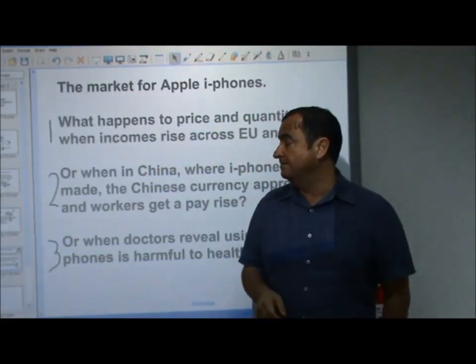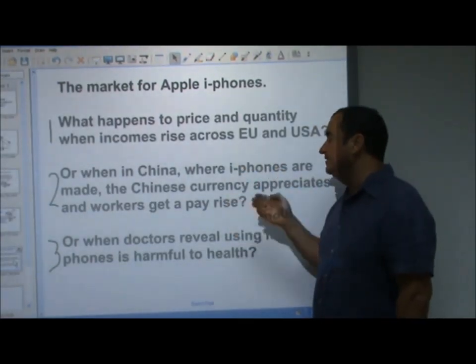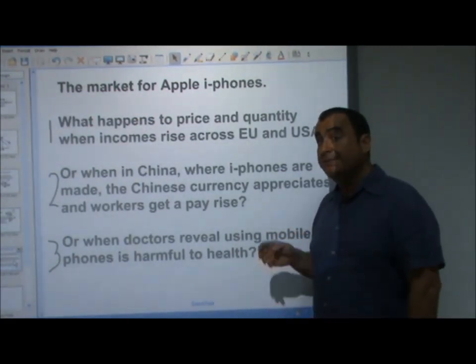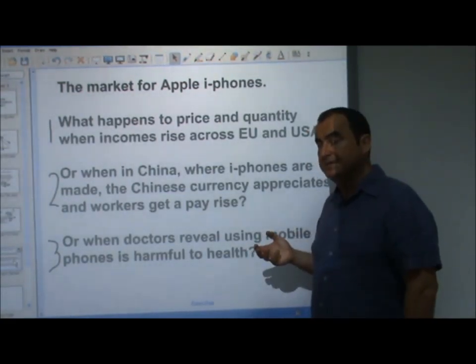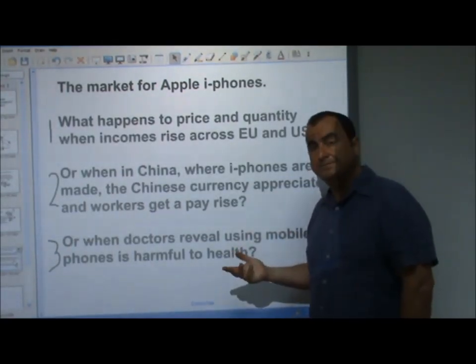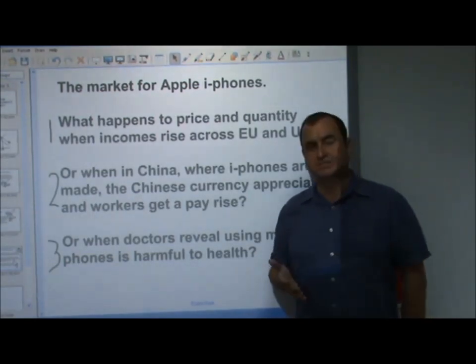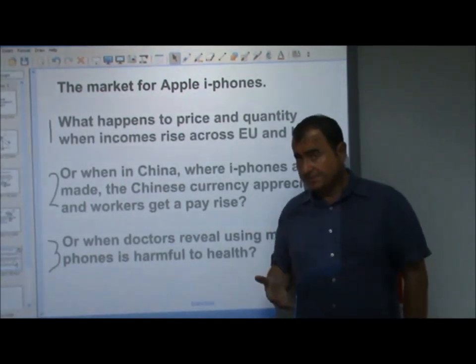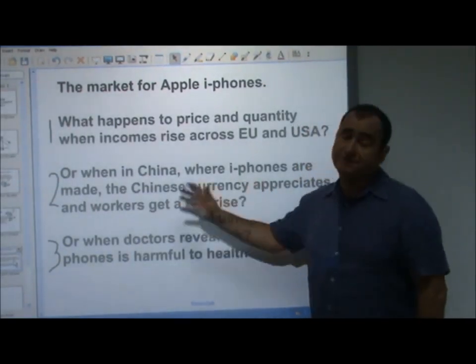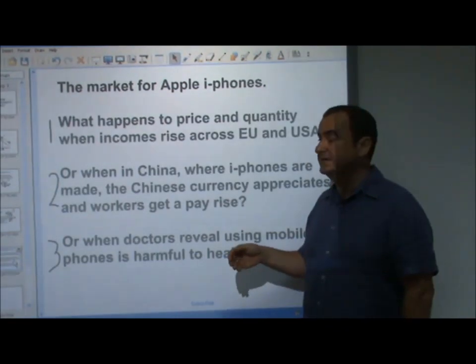Let's look at the second iPhone question. What happens to equilibrium price and quantity when in China, where iPhones are made, the Chinese currency appreciates and workers get a pay rise? It's happening on the supply side. If the currency appreciates, it becomes more expensive for Westerners to buy these goods from China. Secondly, if the workers in the iPhone factories get a pay rise, it's going to raise costs of production. Both of these things happen on the supply side. They're both raising the cost of production and they're going to both shift the supply curve inwards, a decrease in supply. It's going to make price go up and it's going to make quantity fall.